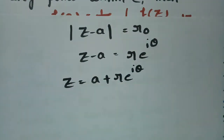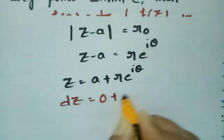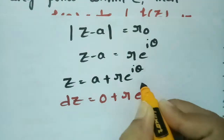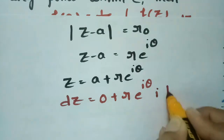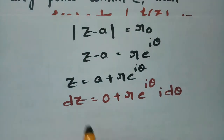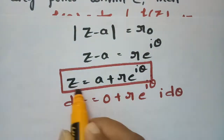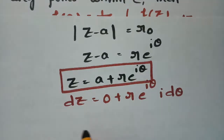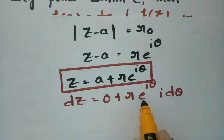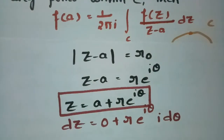Now I need dz. Taking the derivative: since a is a constant its derivative is 0, and differentiating r naught times e to the power i theta with respect to theta gives dz equal to r naught times e to the power i theta times i times d theta. So from the circle equation z equals a plus r naught times e to the power i theta, we get dz equals r naught times e to the power i theta times i times d theta.